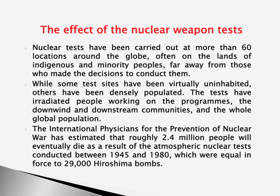The net effect of nuclear tests has been felt at more than 70 locations around the globe, often on the lands where indigenous minority peoples dwell, far away from habitations. Downwind and downstream communities also get affected. The International Physicians for the Prevention of Nuclear War has estimated that roughly 2.4 million people will eventually die as a result of atmospheric nuclear tests conducted between 1945 and 1980 — equivalent in force to 29,000 Hiroshima bombs.